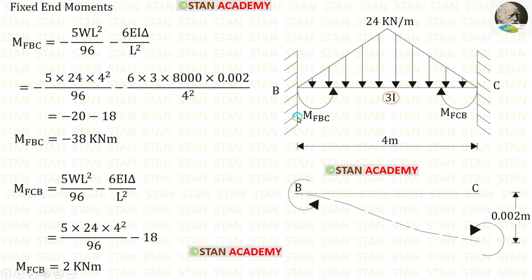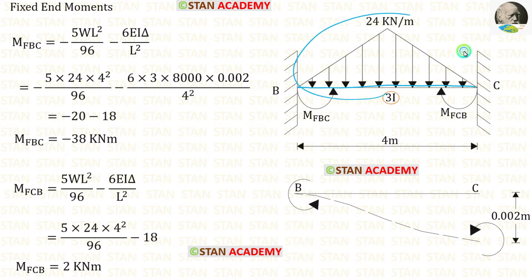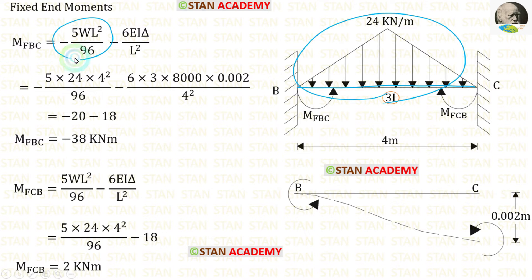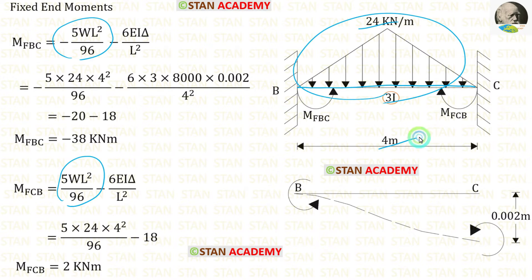Now let us find the fixed end moments in span BC, which has a symmetrical uniformly varying load. The formulas are minus 5WL² upon 96 and positive 5WL² upon 96. Here W is 24 and L is 4.